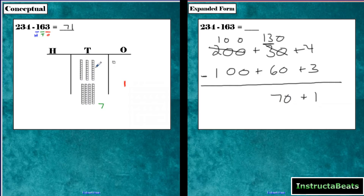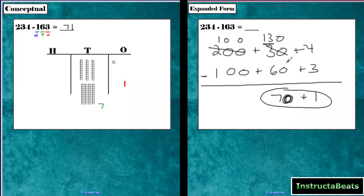If I have 7 ten-blocks — 10, 20, 30, 40, 50, 60, 70 — that's the same thing. When you're doing expanded form, you're just writing the value of that place. Over here, 100 minus 100 is 0. So my expanded form for the difference is 70 plus 1. When I combine that, I get 71. The expanded form is the exact same thing you did with the base-10 blocks, except you're showing it with the values of each number.